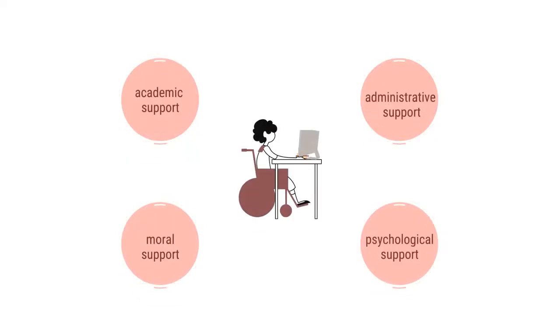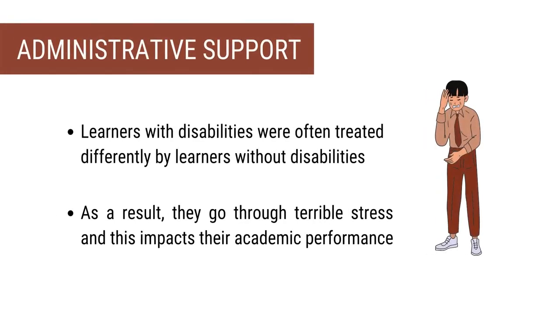Now let us talk about the different kinds of moral and psychological support that we can provide to such learners in open and distance learning system. The syllabus of the majority of universities is designed with normal students in mind. So when learners with disabilities come to a university, they are treated differently and may feel humiliated, devalued, and discriminated against. As a result, they go through terrible stress which impacts their academic performance. It is the moral responsibility of the university and teachers to provide all moral and psychological support so that they gain emotional strength and can continue their studies without much difficulty.